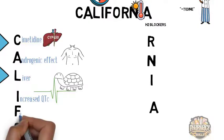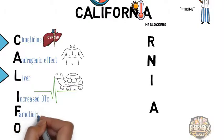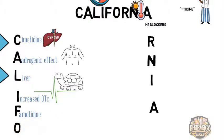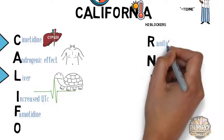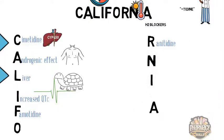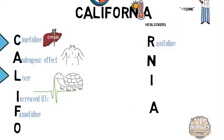F stands for famotidine. We skip O and go to R — R stands for ranitidine, which also has the suffix T-I-D-I-N-E.